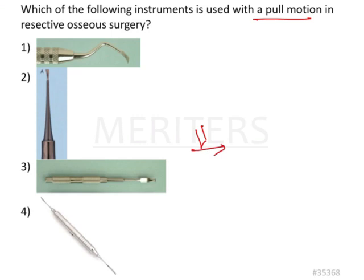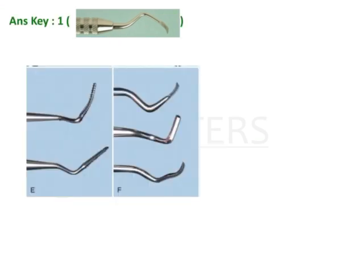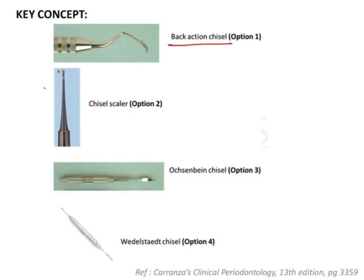All chisels are used with a push motion. However, there are certain exceptions and these are called pull motion chisels. The pull motion chisels are also called the back action chisels. As you see over here, this is a back action chisel.